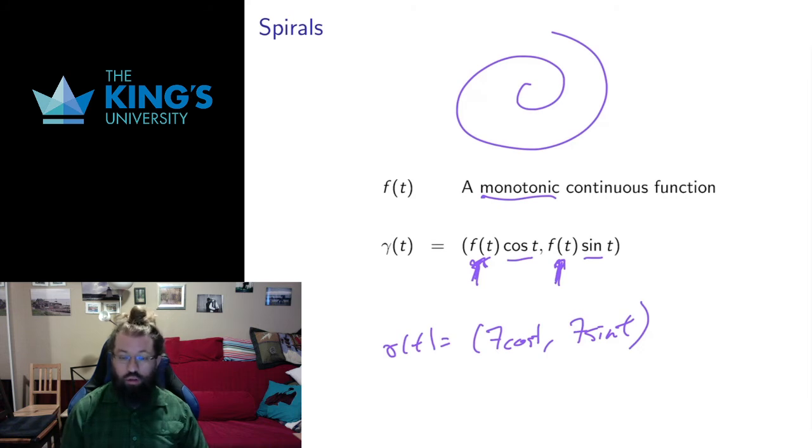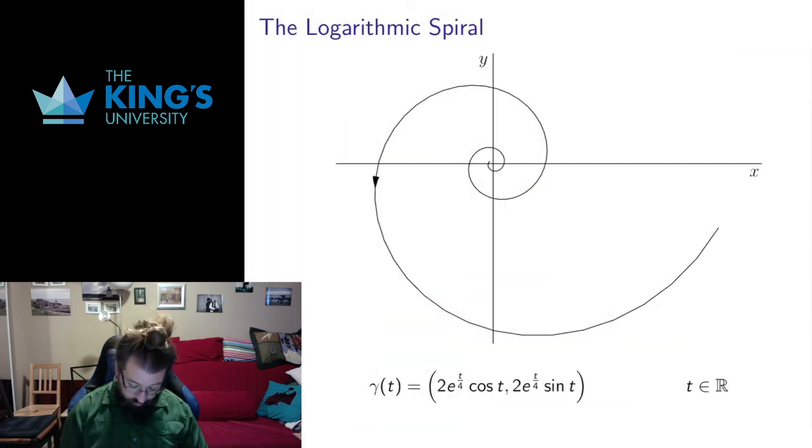If f is decreasing, I'm going to get something that spins inward. In either case, I'm going to get a spiral. So let me show you some examples of spirals. So here, the monotonic function is the increasing exponential function.